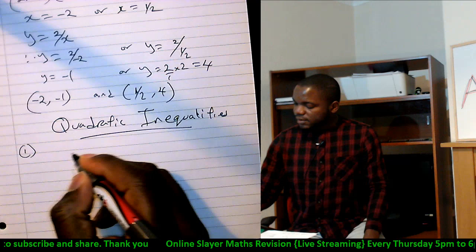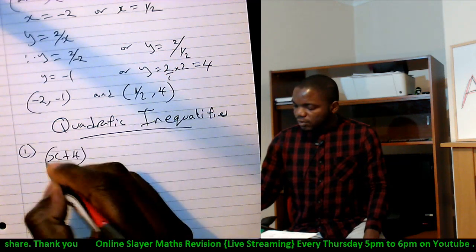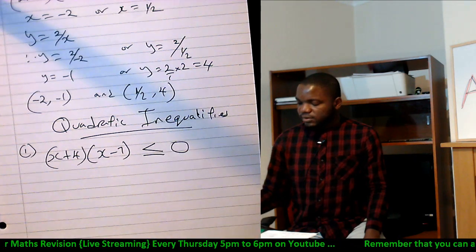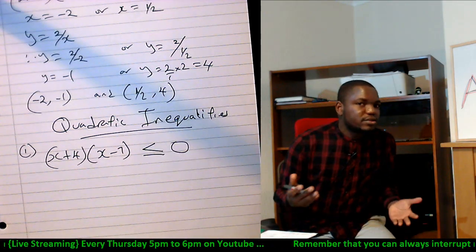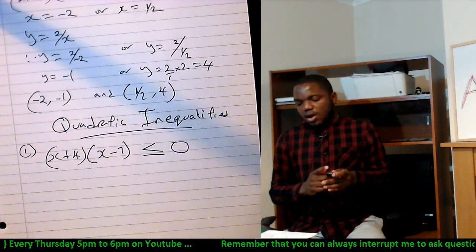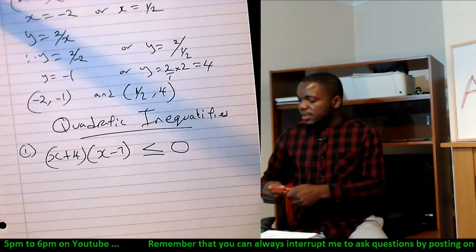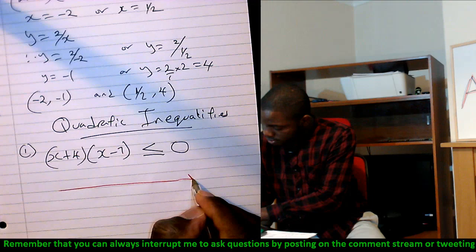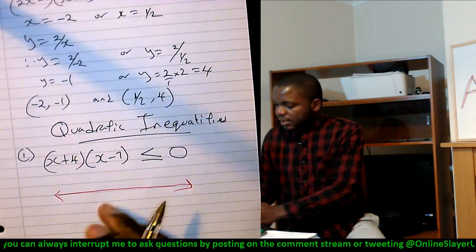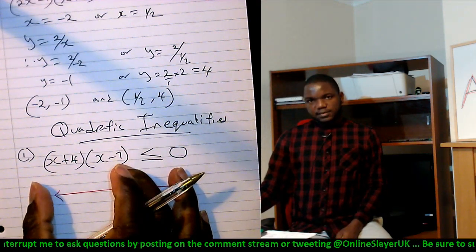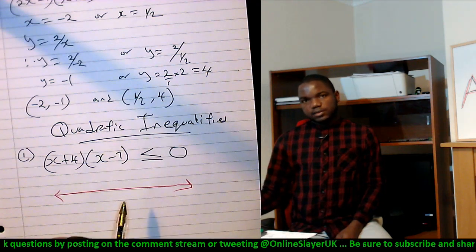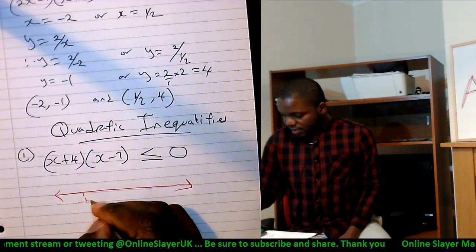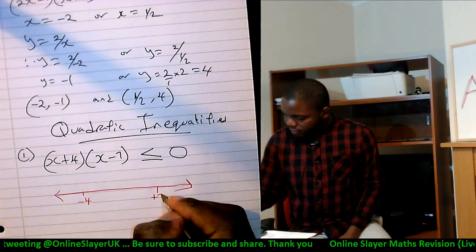First thing first, x plus 4 times x minus 7 less than or equal to 0. What is the solution? All you need to do is draw your number line. Now let's assume this were quadratic. What would be the solutions? Minus 4 and plus 7. Yes, that's true. Minus 4 and plus 7.